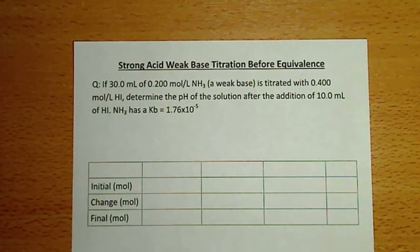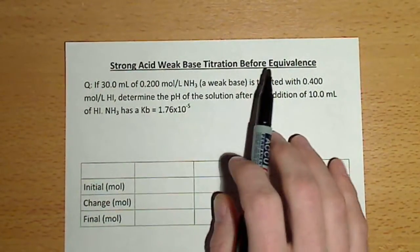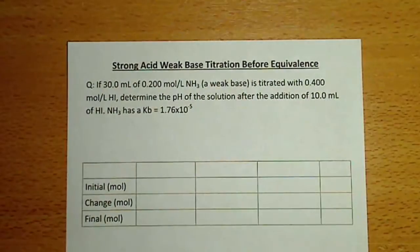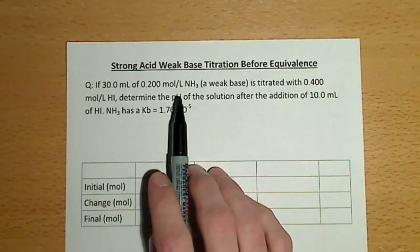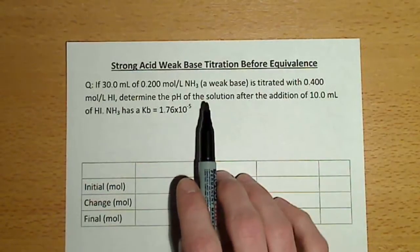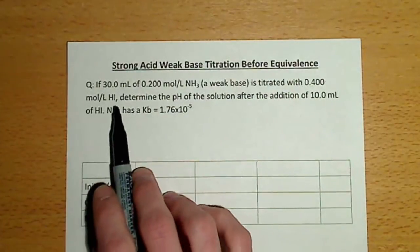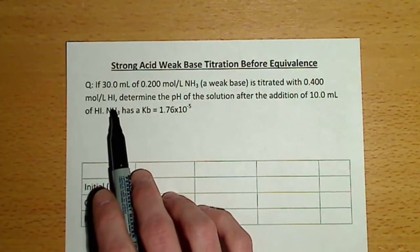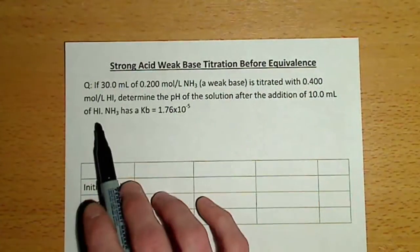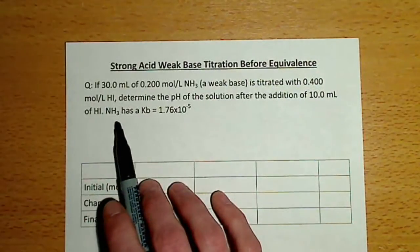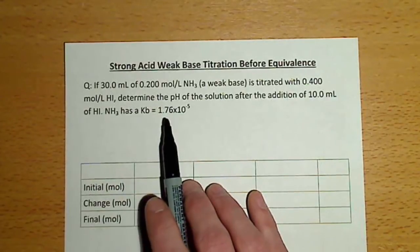In this video we're going to look at a strong acid weak base titration before the equivalence point is reached. In the question, we're asked: if 30 milliliters of a 0.2 mole per liter solution of ammonia, which is a weak base, is titrated with 0.4 mole per liter hydroiodic acid, which is a strong acid, determine the pH of the solution after the addition of 10 milliliters of hydroiodic acid. We're also told that ammonia has a Kb value of 1.76 times 10 to the negative 5.